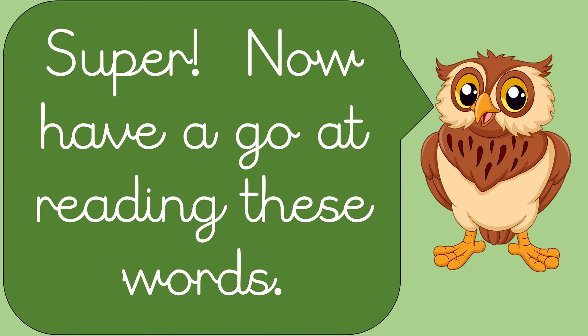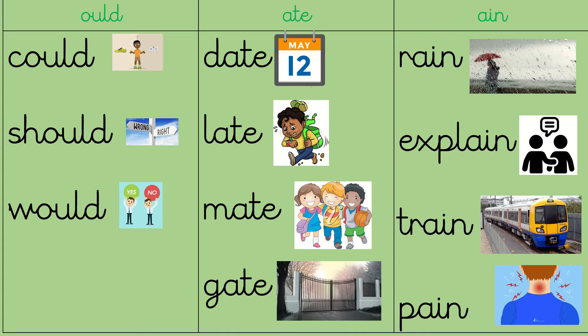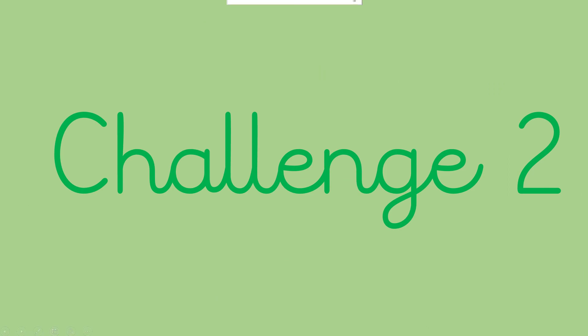Super! Now have a go at reading these words. Look, so we've got words that all have the same spelling but just changed some letters. All of these have got o-u-l-d, all of these have got a-t-e at the end by the look of it, and all of these have got 'ain' and the beginning part of the word is just changed. Pause the video now and have a go at reading those. Great job everyone! Right, let's move on. See you soon for challenge two.